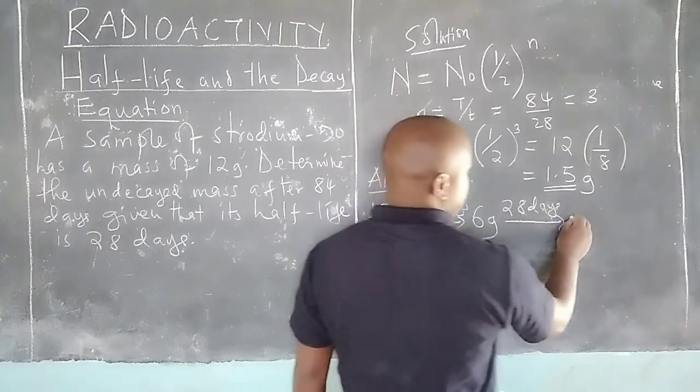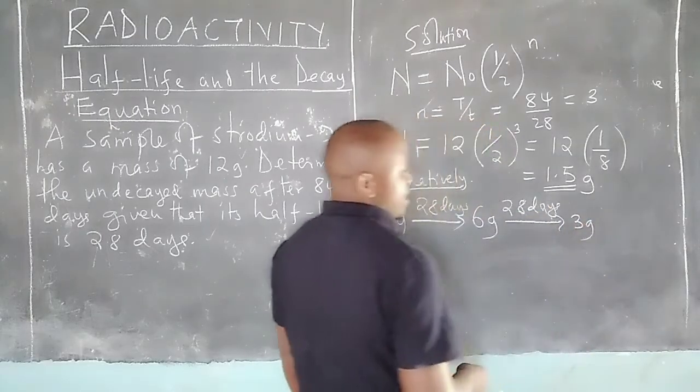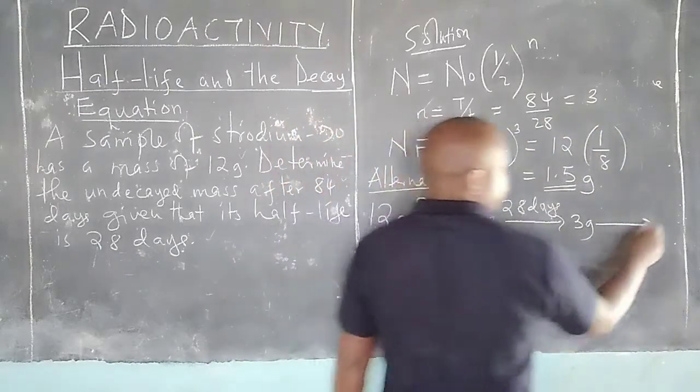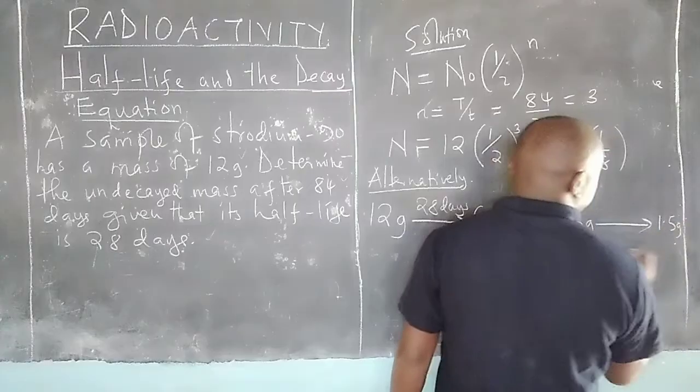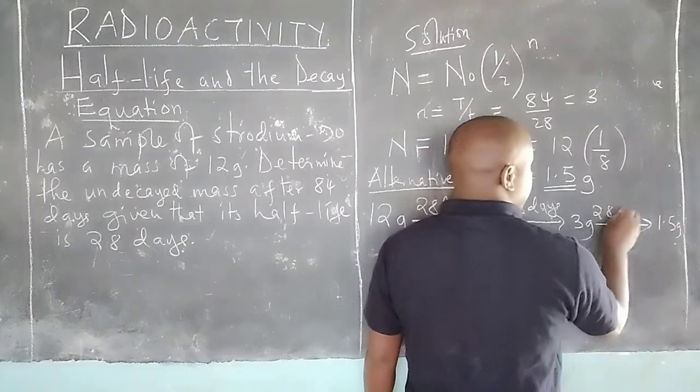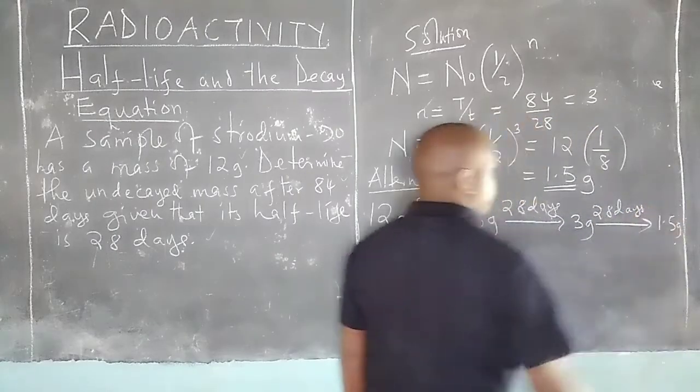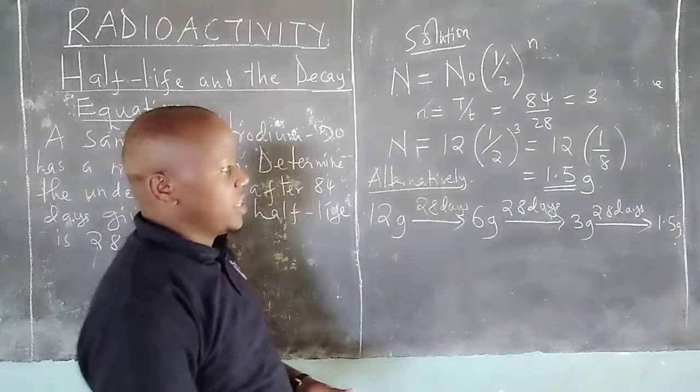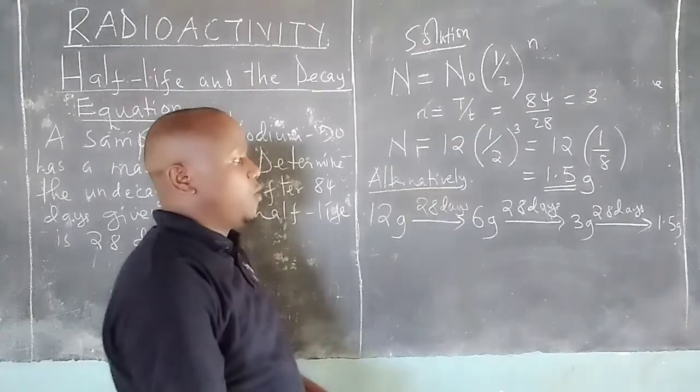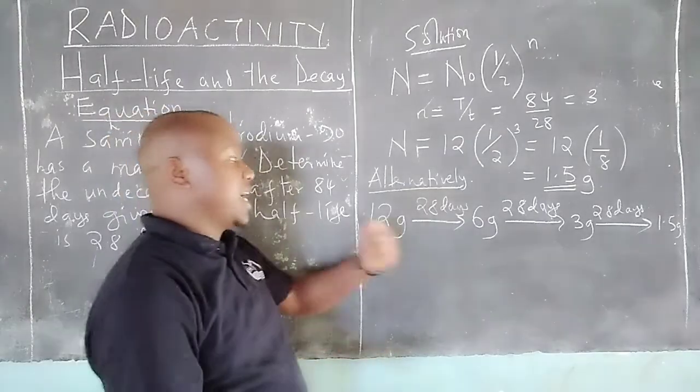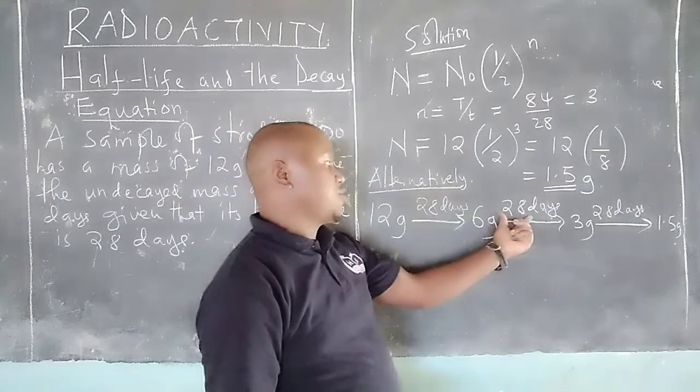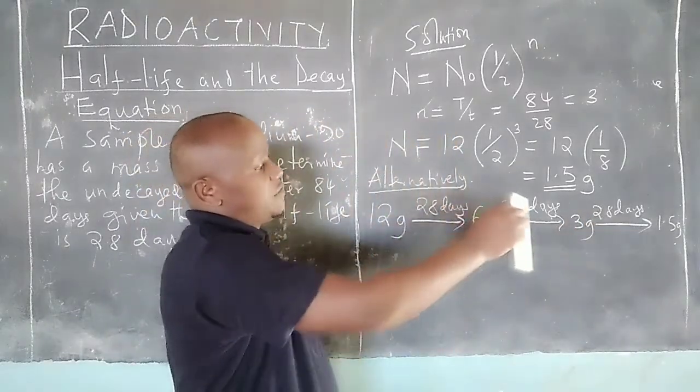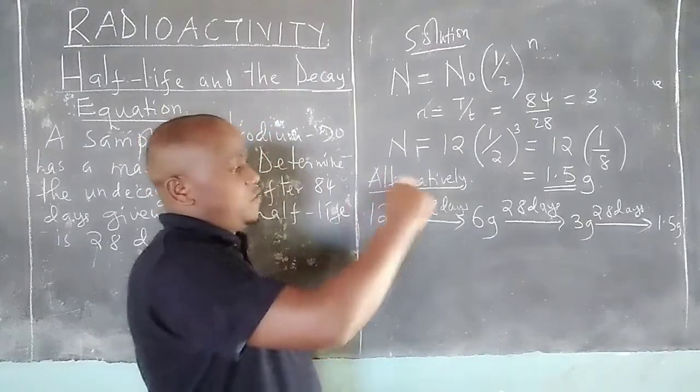And the 3 grams which has remained will take 28 days to become 1.5 grams. This checks the number of decays. You realize we have 28, another 28, another 28, and that is already 84 days.